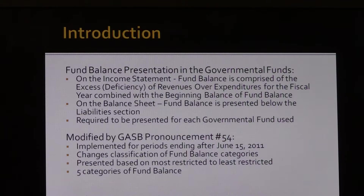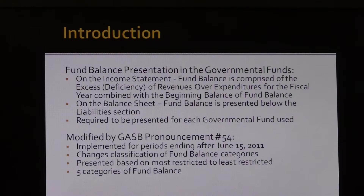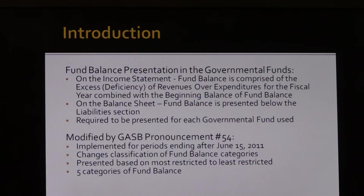The best way to envision fund balance is in terms of the fund it is associated with. For example, a special revenue fund exists for a specific revenue source and the uses of those resources, so the remainder after the liabilities have been satisfied would be a fund balance with certain limitations imposed on it. Since June 15, 2011, the Governmental Accounting Standards Board has required implementation of GASB pronouncement number 54. This pronouncement reclassified fund balance designations from reserved and unreserved into five new categories, presented on the balance sheet in a hierarchy from most to least restricted.